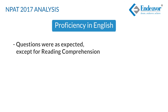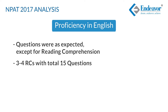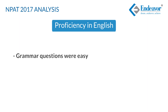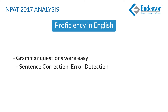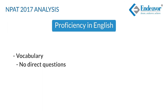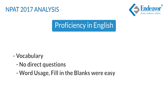The English proficiency section was also more or less on expected lines, except for reading comprehension. The official pattern mentioned three passages of 5 questions each, but there were deviations — in some instances there were 4 passages and in others there were 3, though the total remained 15 questions. The level of difficulty of all passages was very easy. Grammar questions — both sentence correction and error detection — were also really easy. Vocabulary questions were not direct synonym or antonym based, but word usage in appropriate or inappropriate sentences and fill-in-the-blank questions can also be considered easy.